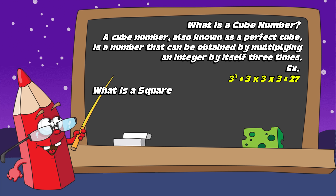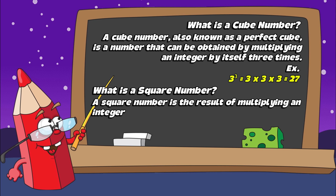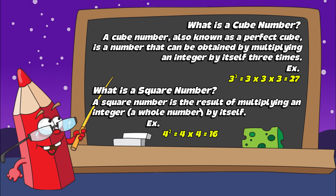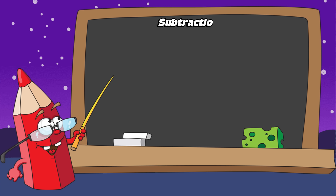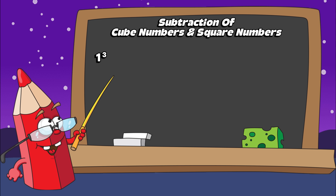What is a square number? A square number is the result of multiplying an integer — a whole number — by itself. Example: four squared is four times four, which equals sixteen. Now, join me and let's do subtraction of cube numbers and square numbers. One cubed minus one squared equals zero. Or one minus one is equals to zero.